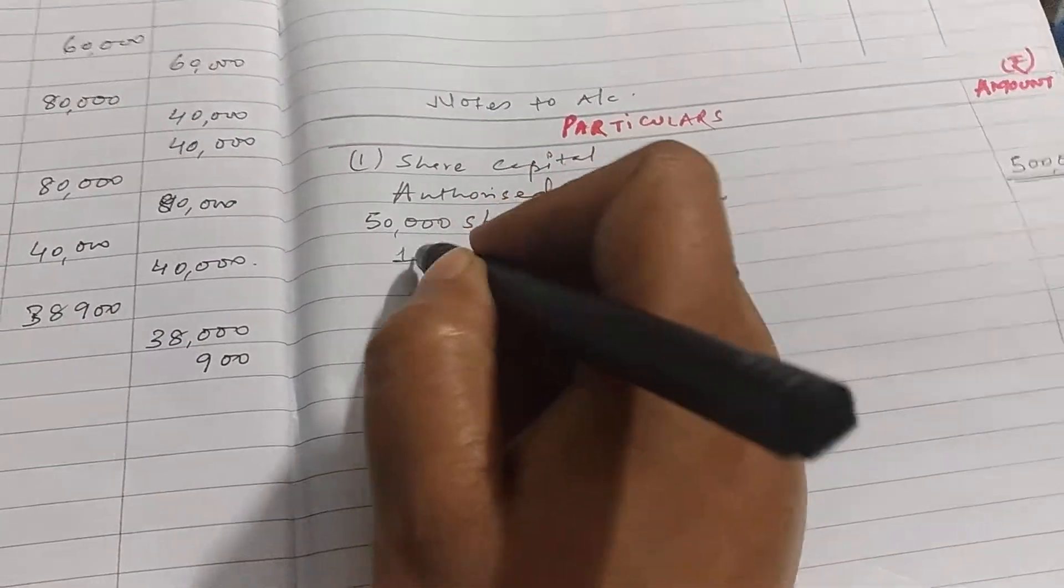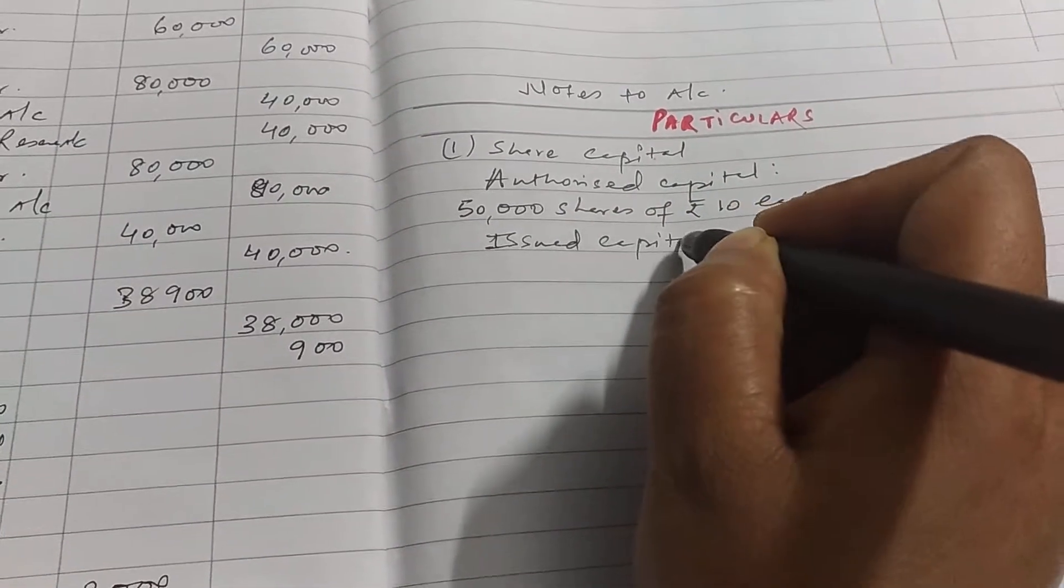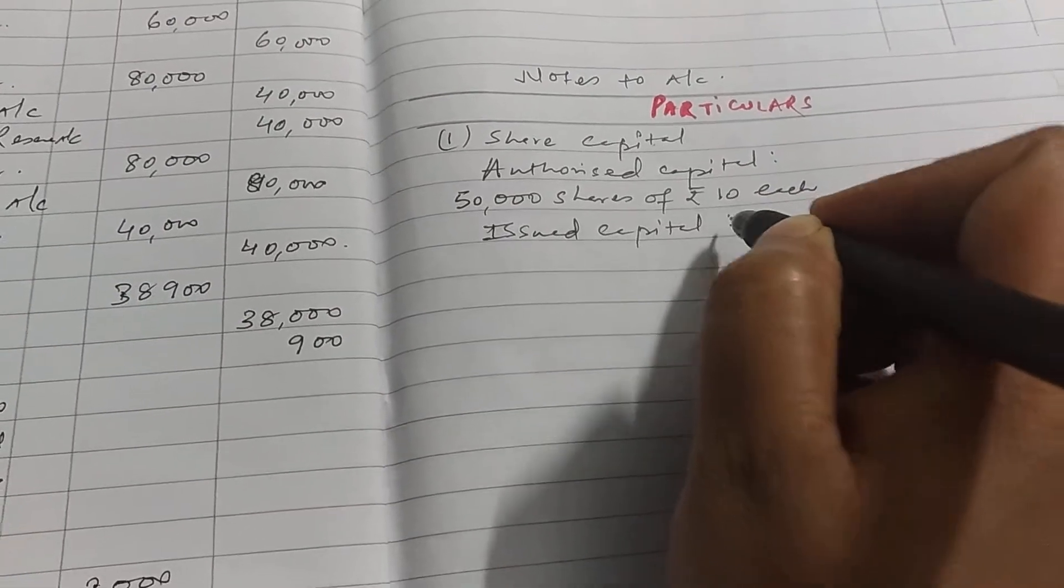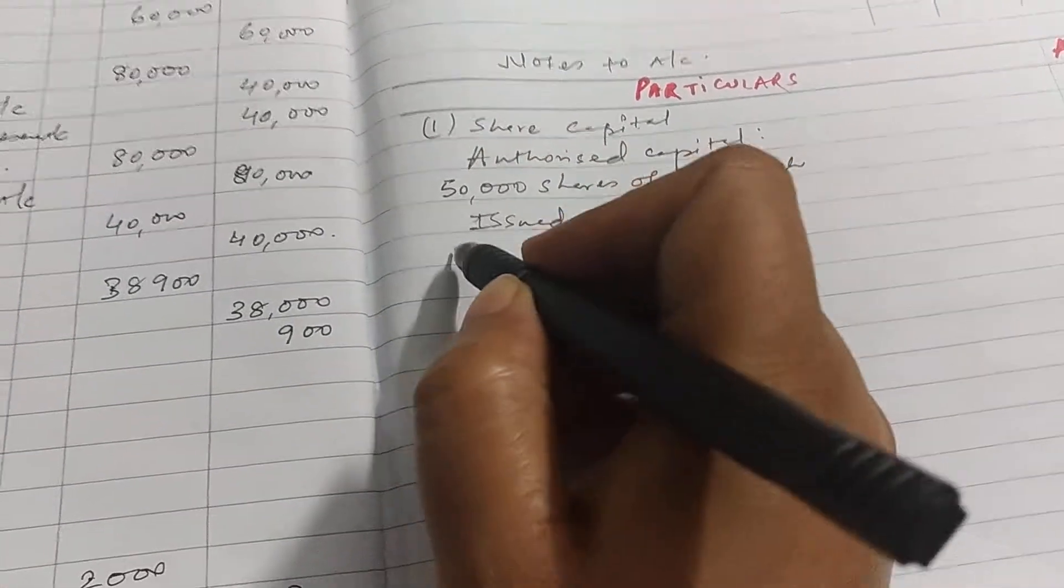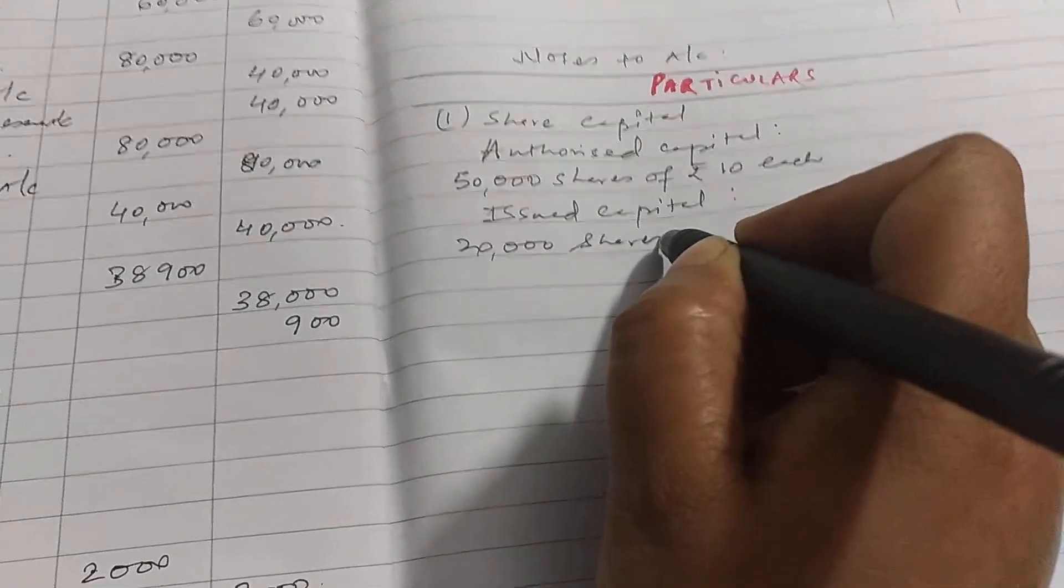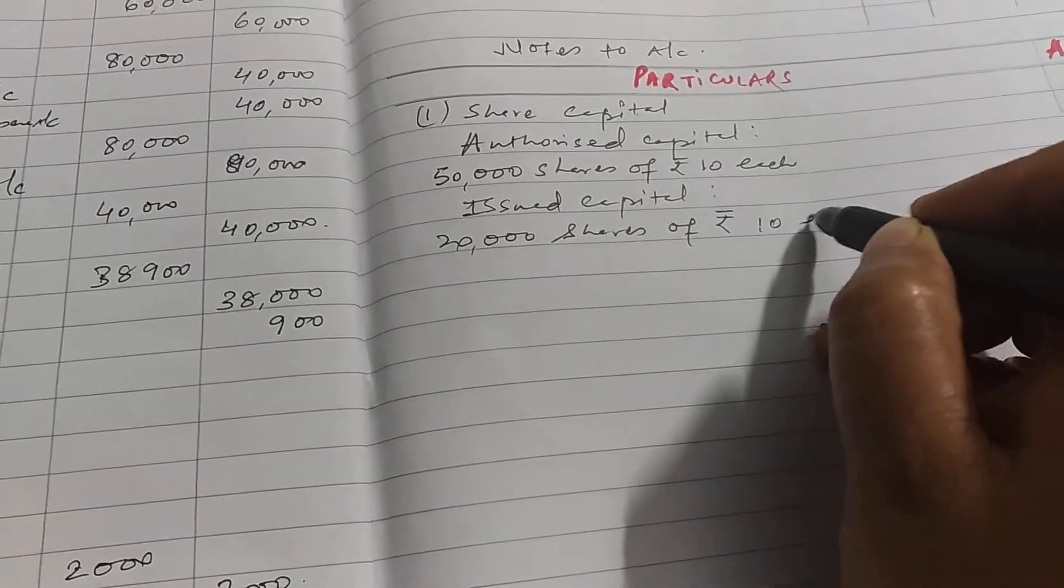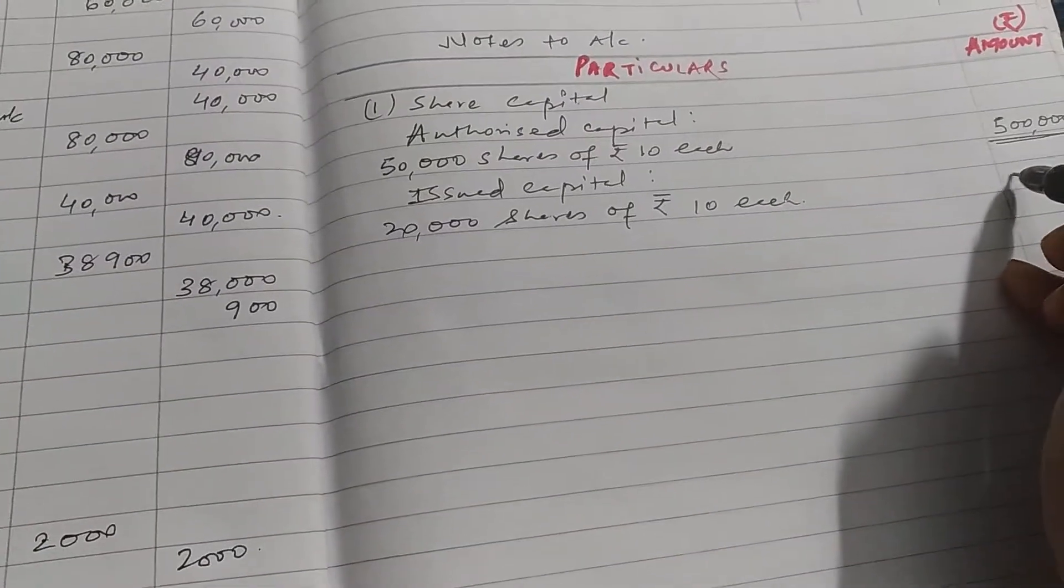Then issued capital. Issued capital is how much? 20,000. So 20,000 shares of rupees 10 each, how much? Two lakh.